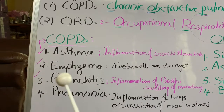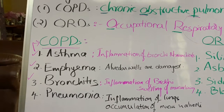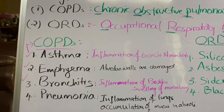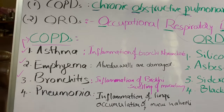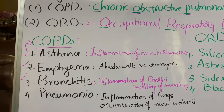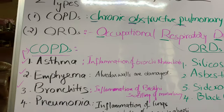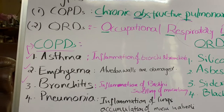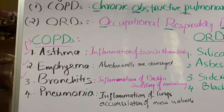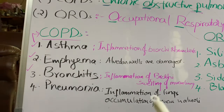The third COPD is bronchitis, which is inflammation of the bronchi. The mucus lining of the bronchi is swelled, causing inflammation and increased production of mucus. That is why patients with bronchitis have the characteristic symptom of cough with sputum or phlegm. These three — asthma, emphysema, and bronchitis — are together known as chronic obstructive pulmonary disorders.